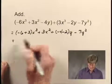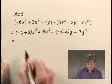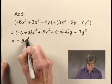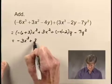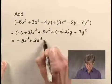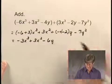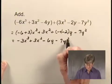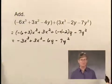And now let's just simplify what we have. Negative 6 plus 3 is negative 3, so I have negative 3x cubed. Then I have the plus 3x squared. Negative 4 minus 2 is negative 6, so I'm going to have negative 6 times y, and then negative 7y squared for the sum that we were looking for.